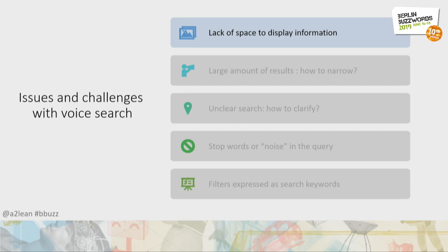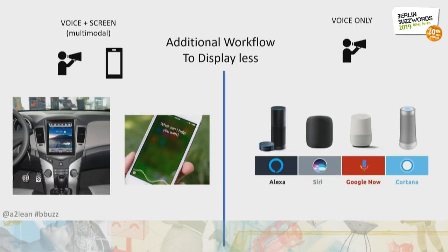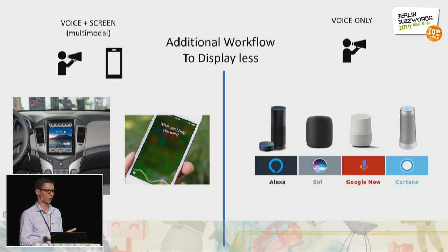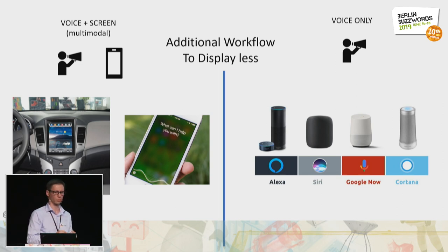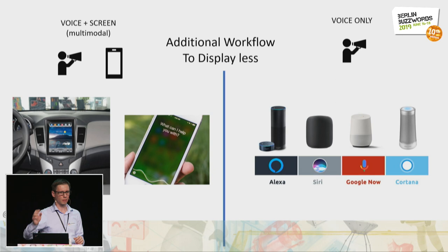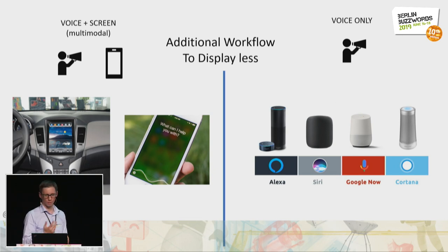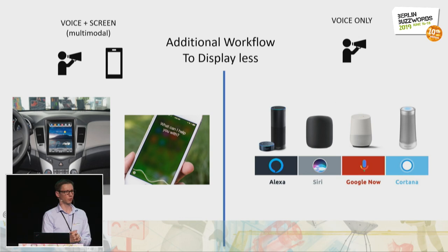Now the first challenge: lack of space to display information. There are two possibilities. Sometimes you can have a small display — like in a car, you can talk to it and it can display things on a screen, or a phone assistant can talk and display something. The second way is voice only, and there it's much more difficult — you actually don't have any space to display anything; you just talk to the user.